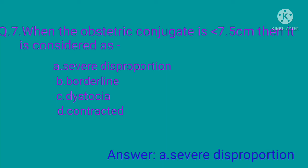In the pelvic anteroposterior diameter, we use three diameters: the anatomical conjugate, obstetrical conjugate, and diagonal conjugate. The anatomical conjugate is 11 centimeter, the obstetrical conjugate is 10 centimeter, and the diagonal conjugate is 12 centimeter.